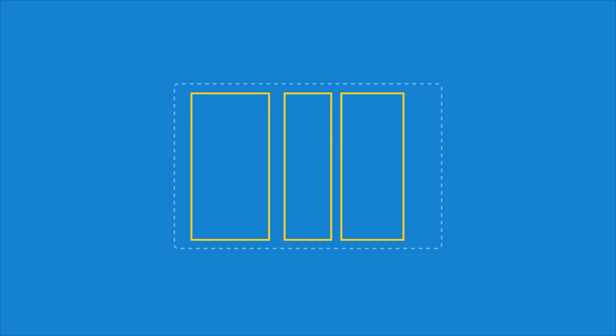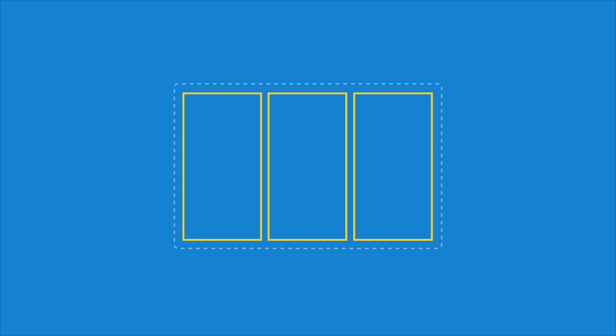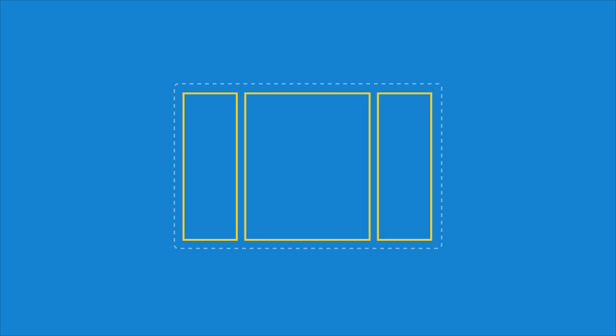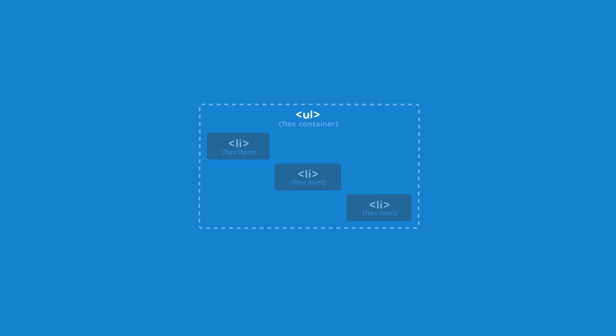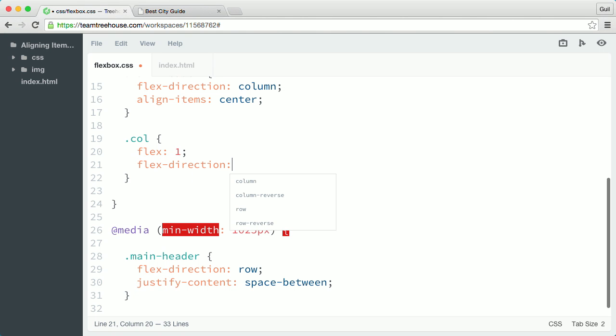With Flexbox, you can change the direction, size, and order of elements, regardless of their original size and order in the HTML. And you can place your content anywhere from top to bottom, left to right, center, and middle of a container, no matter where they appear in the source code. You can even stretch and shrink elements and distribute space, all with just a few lines of CSS.